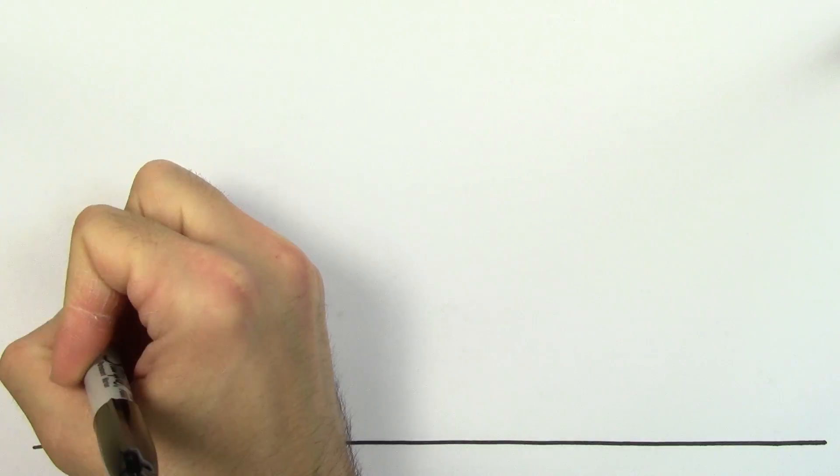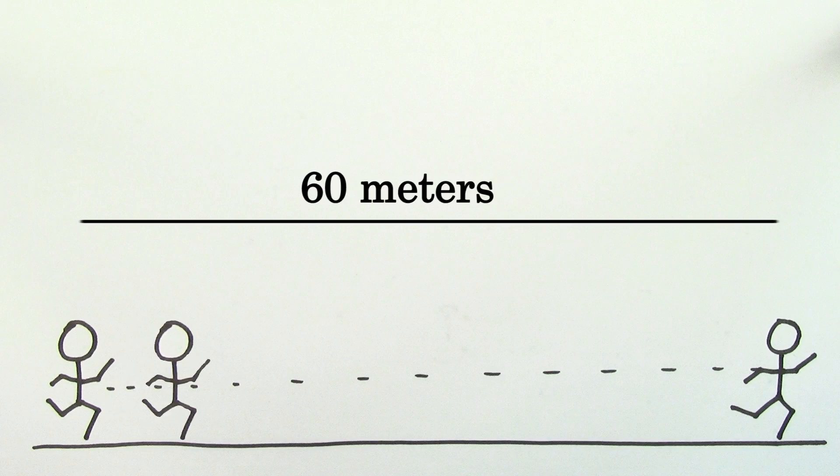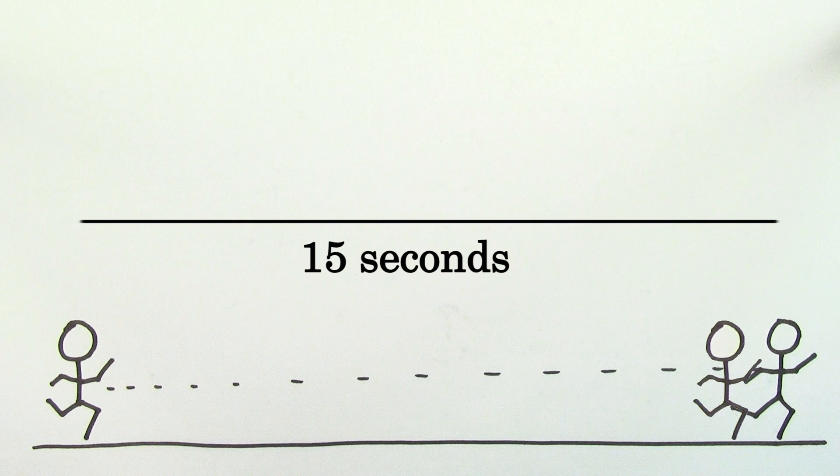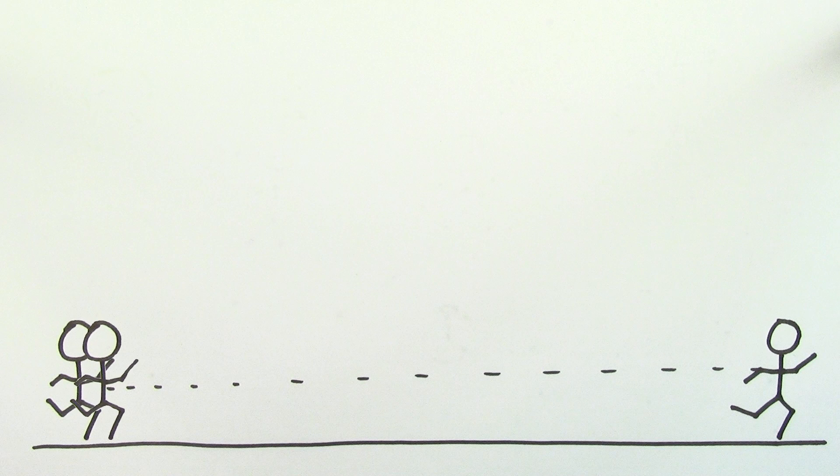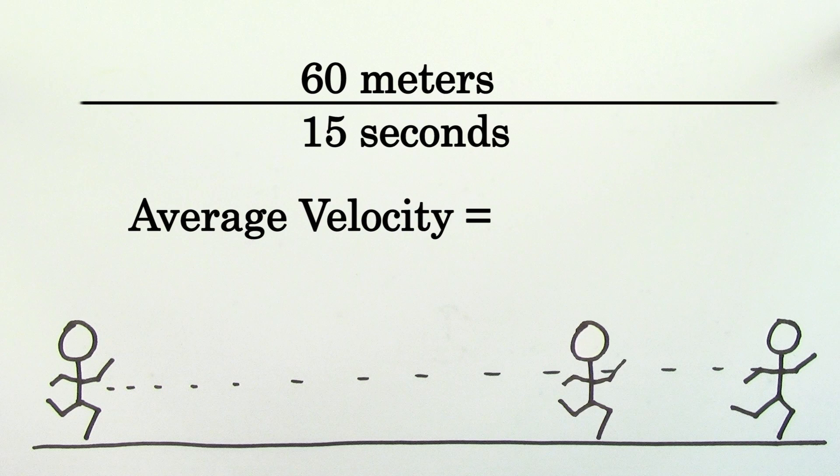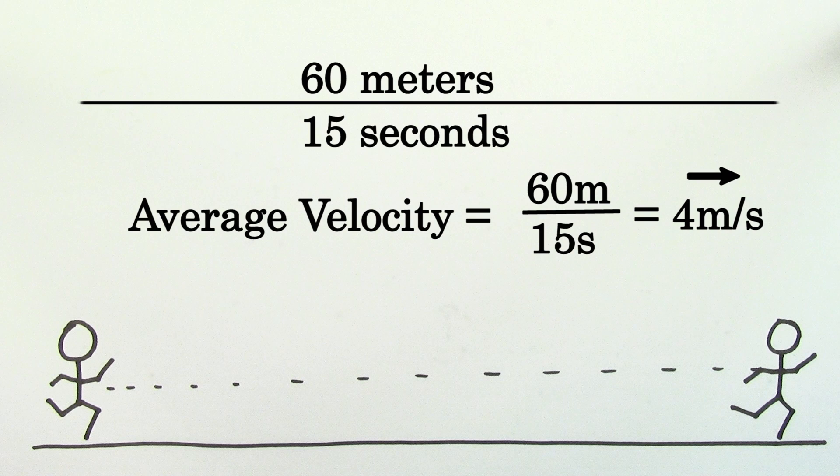In other words, let's say you jogged 60 meters in a time of 15 seconds. During this time, you were speeding up and slowing down and changing your speed at every moment. Regardless of the speeding up or slowing down that took place during this path, your average velocity is still just going to be 4 meters per second to the right, or if you like, positive 4 meters per second.